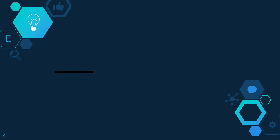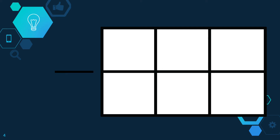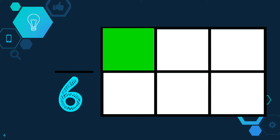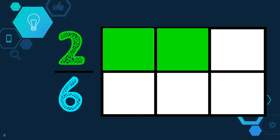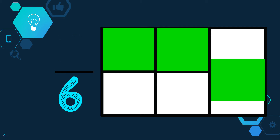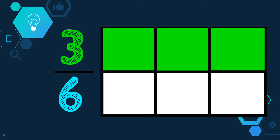Let's look at another example. I have a figure here that has been partitioned into 6 equal parts. Since it has been partitioned into 6 equal parts, the number 6 goes in the denominator. Let's say I shade one part of the figure. I have shaded 1 out of 6 parts, or 1 sixth. If I shade another part, I have shaded 2 out of 6 parts. If I continue to shade, now I have shaded 3 out of 6 parts, or 3 sixths.